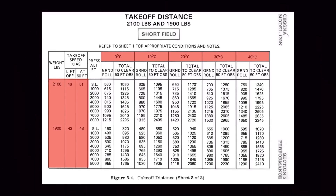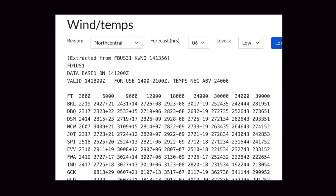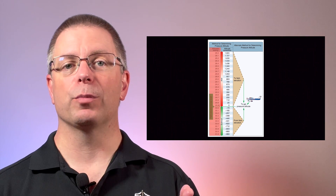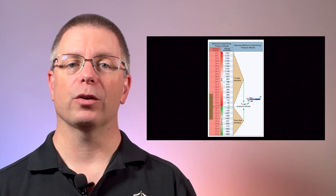First, some definitions. Index values are typically on the left or the top of a table and are used to look up the answers. For example, when looking up pressure altitude conversion factors, the altimeter setting would be the index value.